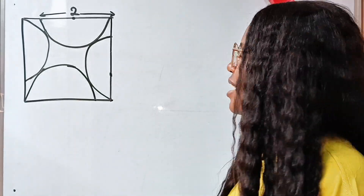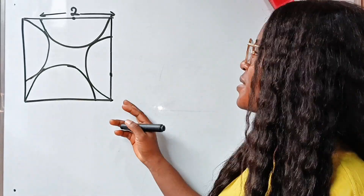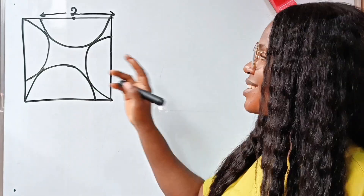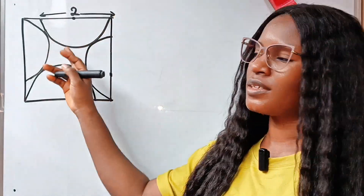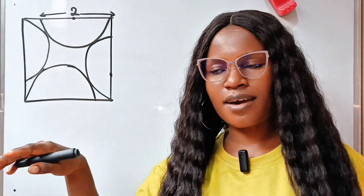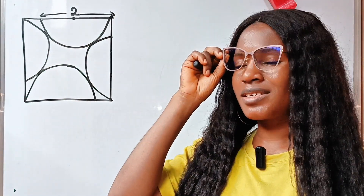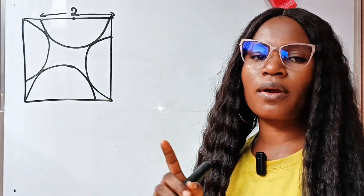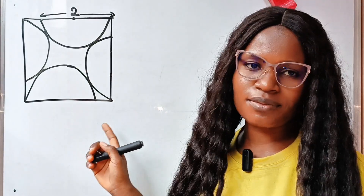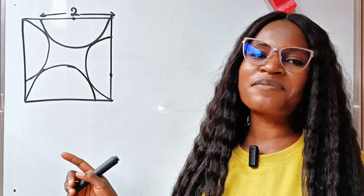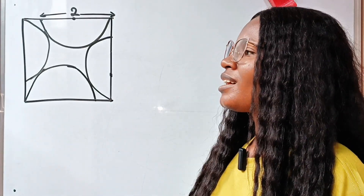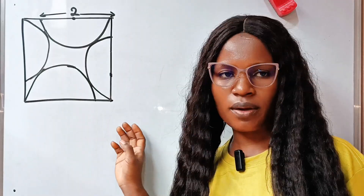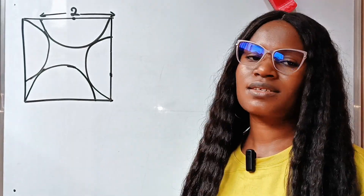How do we find the area of this square when the only information given to us is the diameter of this semicircle? It is easy, but you just have to apply one theorem that will give you the answer. Welcome back to my channel. Today we are asked to find the area of this square.